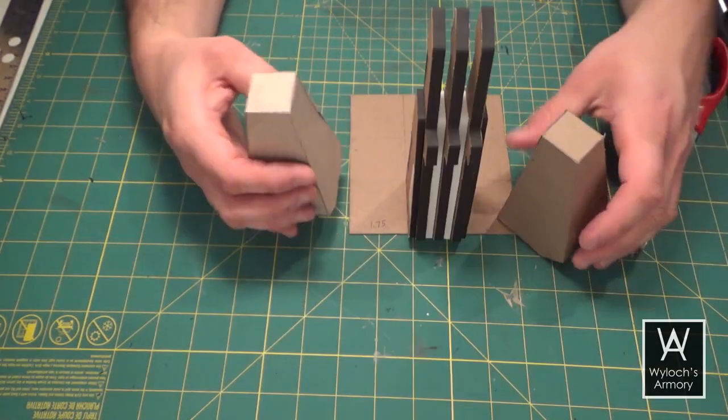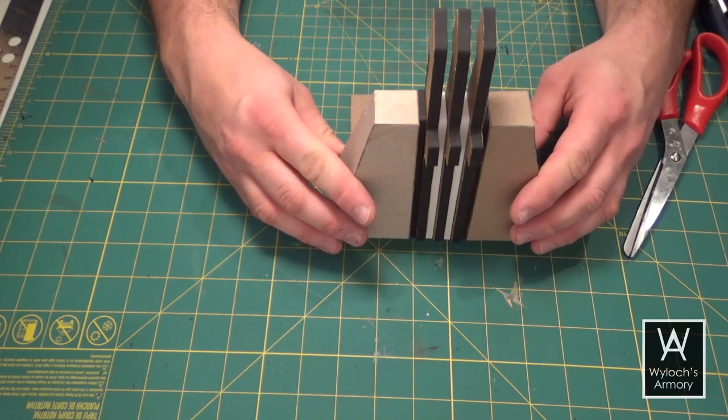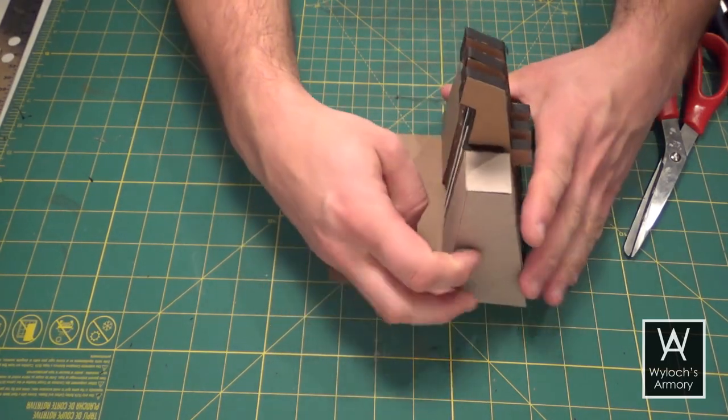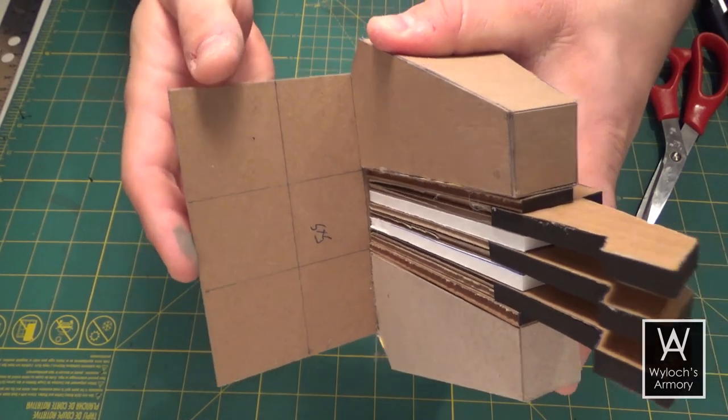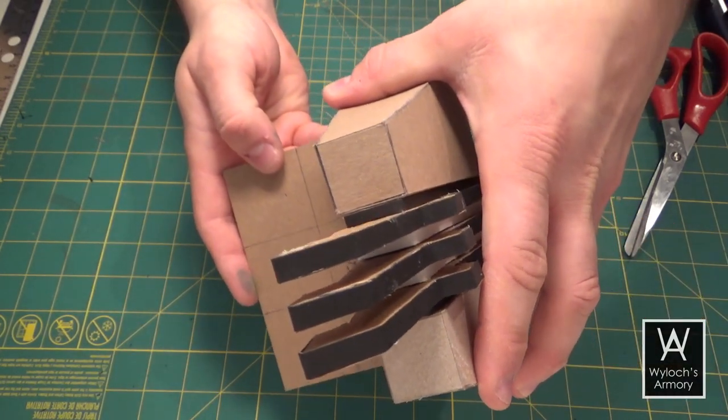Then hot glue two of the main body pieces to each side of it as shown. Make sure to glue the bottoms and the sides for strength. Work quickly so that the hot glue doesn't cool on you.